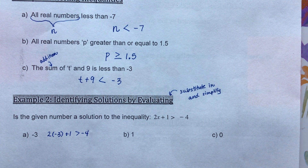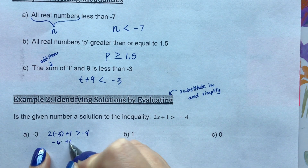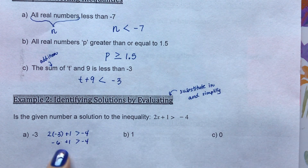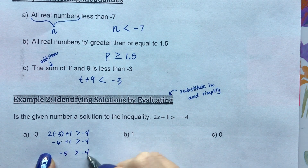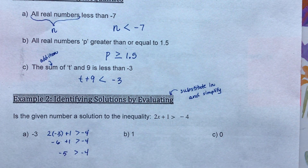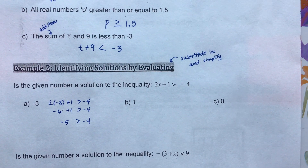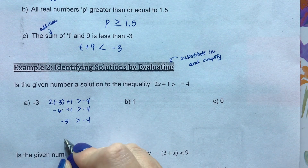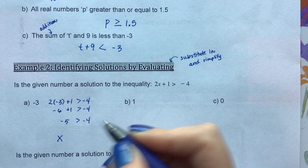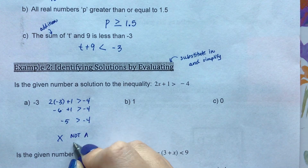Following order of operations: 2 times negative 3 is negative 6, then carry down plus 1 is greater than negative 4. Continuing to simplify the left side: negative 6 plus 1 is negative 5, so we have negative 5 is greater than negative 4. Now we ask ourselves: is negative 5 greater than negative 4? No, it is not — so negative 3 is not a solution.